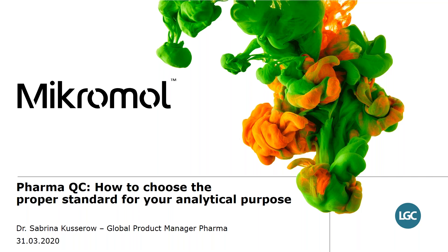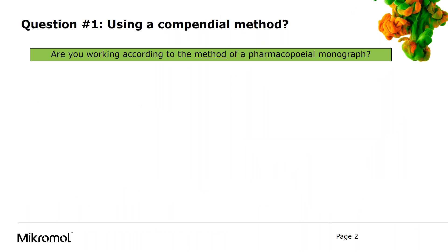To find out what is the best choice for your task, you can go through a few questions and answer them for yourself. The first question to answer could be if you are working according to the monograph method or if you are using your own in-house method.